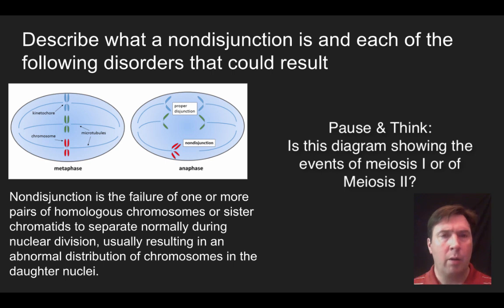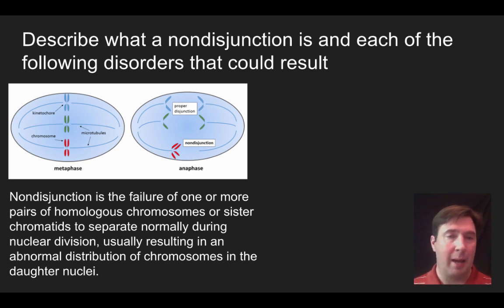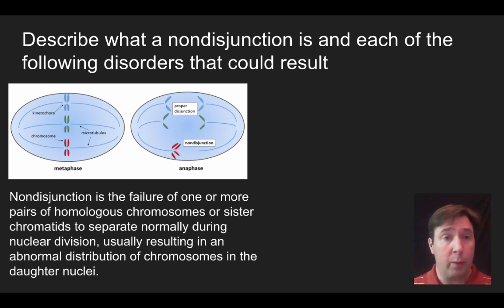Is this diagram showing the events of meiosis 1 or meiosis 2? Hopefully you came up with: since the sister chromatids are being separated, that is not an event of meiosis 1, so it has to be happening in meiosis 2 — specifically metaphase 2 and anaphase 2. The definition notes that both homologous chromosomes and sister chromatids can fail to separate.